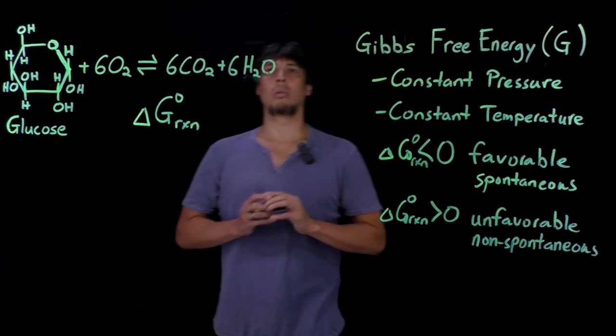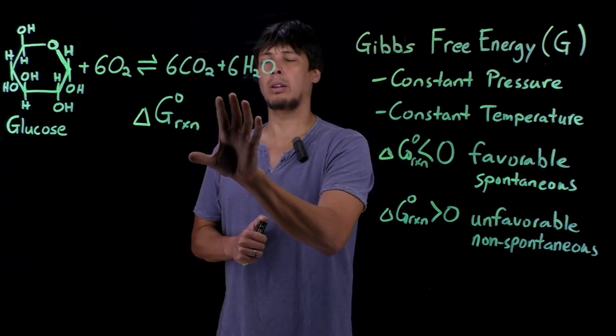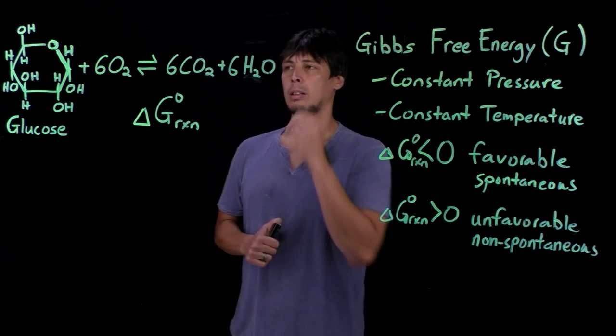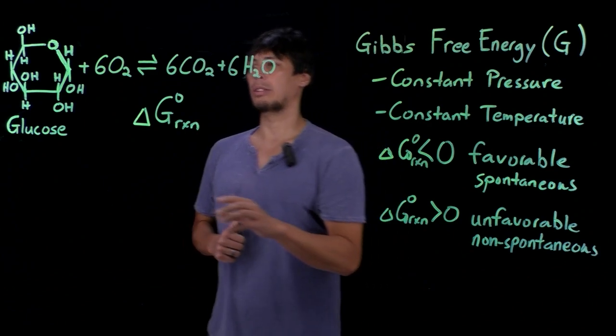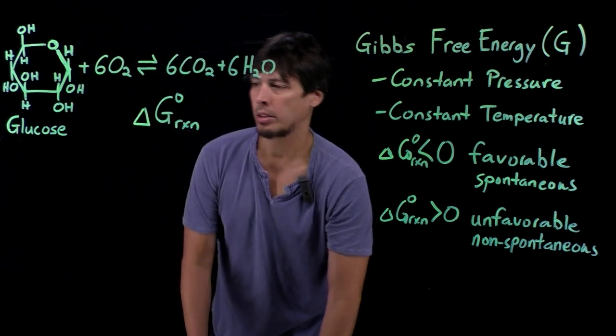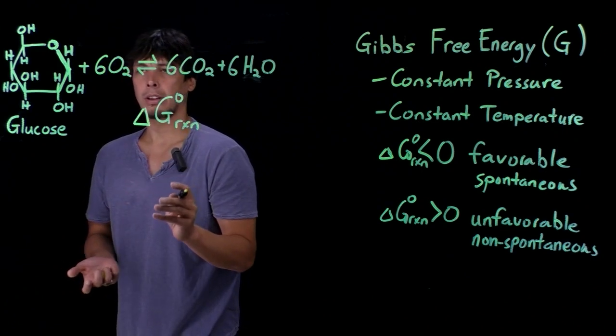So we can calculate whether the ΔG of the reaction is either positive or negative based on the change in Gibbs free energy for formation for both the products and the reactants. This stems from using Hess's law, which can be used for any state function,